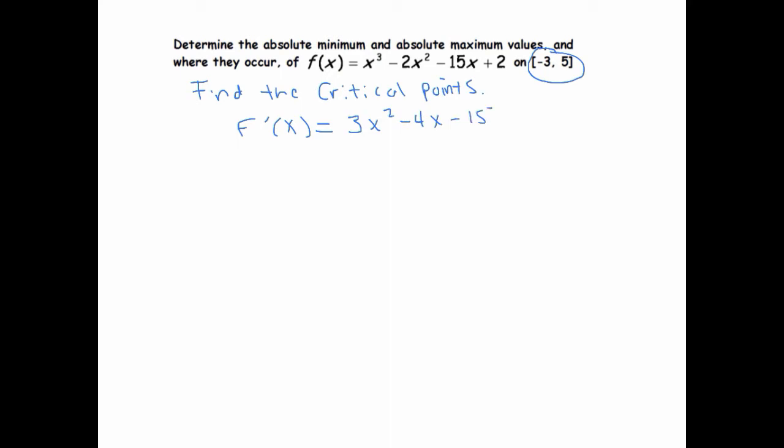And I think I rigged this so that it factors. So that factors to (3x + 5)(x - 3). And solving gives us that x equals negative 5/3 and x equals 3.